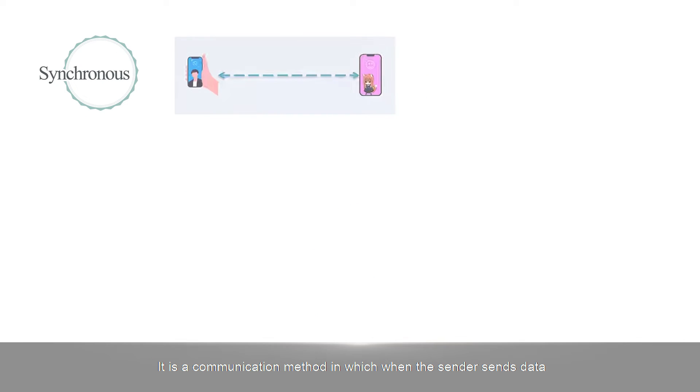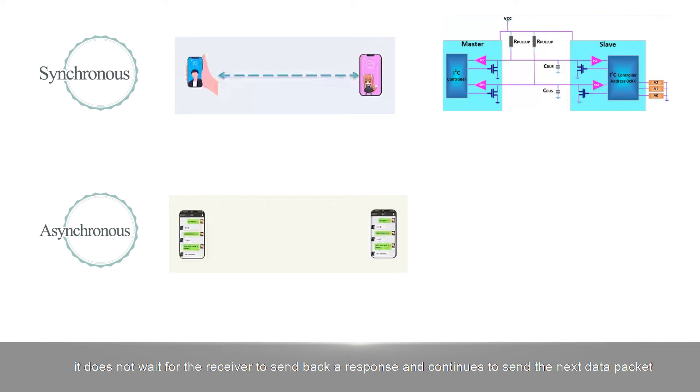Synchronous communication is a method where the sender sends data, and after the receiver sends a response, the sender sends the next data packet. Asynchronous communication is a method where the sender sends data without waiting for the receiver to send back a response and continues to send the next data packet. One needs to wait for the receiver to respond, and one does not.